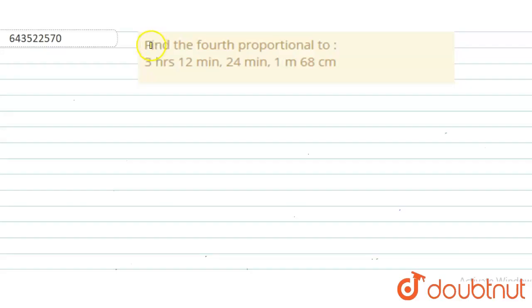Hello students, let us begin with the question. So the question says, find the fourth proportion to 3 hours, 12 minutes, 24 minutes and 1 meter, 68 centimeters. So let us begin.